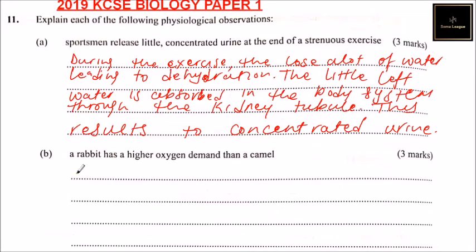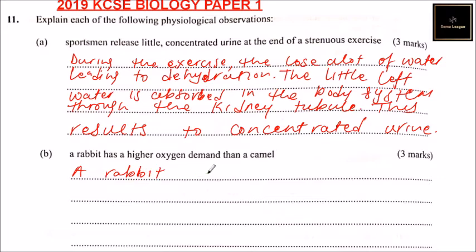Part B: a rabbit has a higher oxygen demand than a camel. So we can answer this and say: the surface area to volume ratio of a rabbit is higher compared to a camel. A rabbit has a higher surface area to volume ratio.